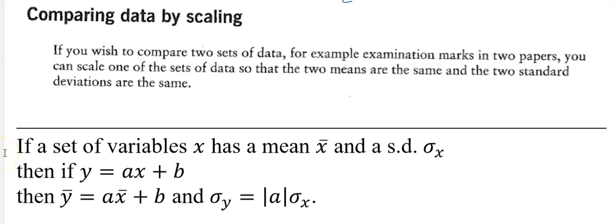In this video we're going to look at how we can compare data by scaling. This is where you have two different sets of data with different means and different standard deviations. It's very difficult to compare them because it's not like for like. What you've got to do is change them such that they both have the same mean and the same standard deviation, and then you can compare performances of somebody in each of the components.